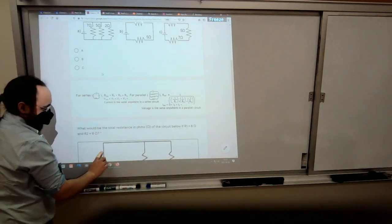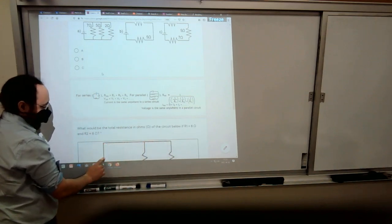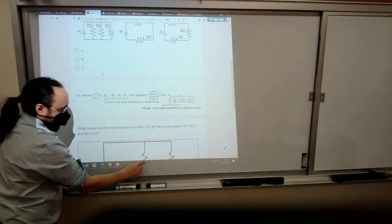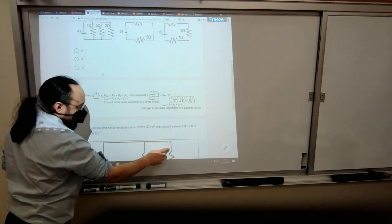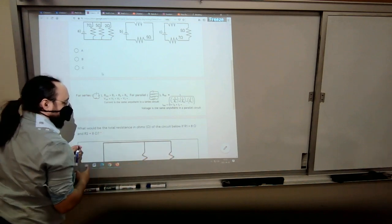I tried to put them both on the same screen here, but I still wanted it zoomed in as much as I could. So this is a parallel circuit. It's got a loop here and a loop here. It's saying if R1 is 8 ohms and R2 is also 8 ohms, what would the total resistance be?